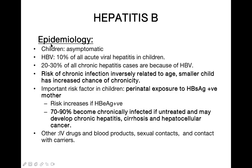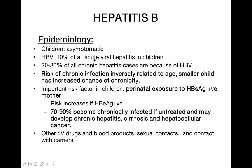Regarding epidemiology: children are usually asymptomatic in case of viral hepatitis B, and almost 10% of all acute viral hepatitis occurs in children. Hepatitis A is much more common than hepatitis B in children. 20 to 30% of all chronic hepatitis cases are due to hepatitis B.